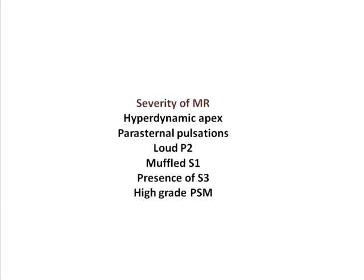The severity of the murmur is reflected by a hyperdynamic apex which is often shifted down and out. You will also see parasternal pulsation as a consequence of right ventricular hypertrophy and pulmonary hypertension. The P2 can be loud and the S1 will be muffled.